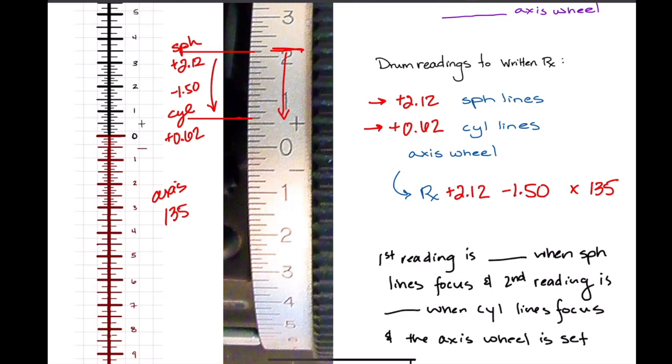If I wanted to read this in plus cylinder form, what would be an easy way to just switch these around so that I get my sphere lines and cylinder lines at the opposite powers? I just rotate the axis by 90 degrees, right? So the axis of 45 instead of 135.